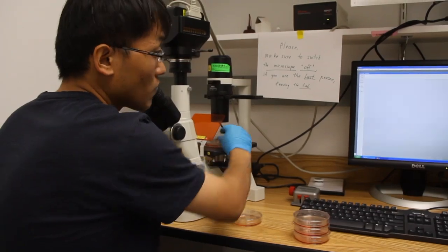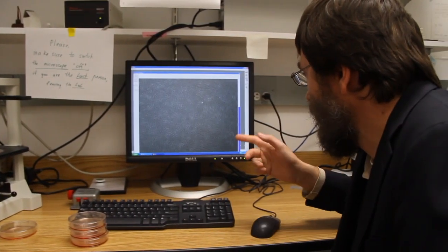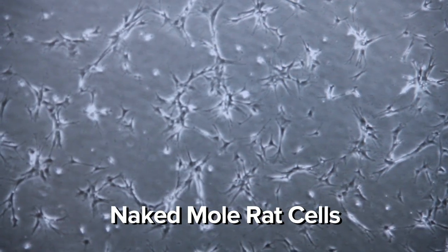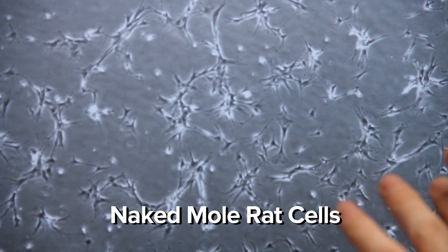Human cells or mouse cells, when they grow in a petri dish, will grow close together. But naked mole rat cells never grew close enough. So we figured out naked mole rat cells are claustrophobic—they don't like to be very close to their neighbors.